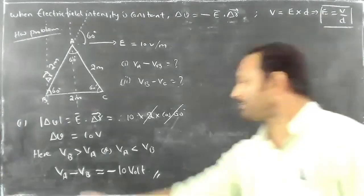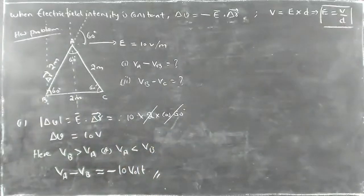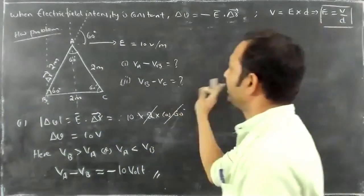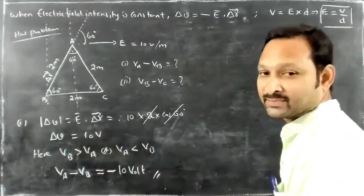So you can say that in the direction of the electric field, potential decreases.